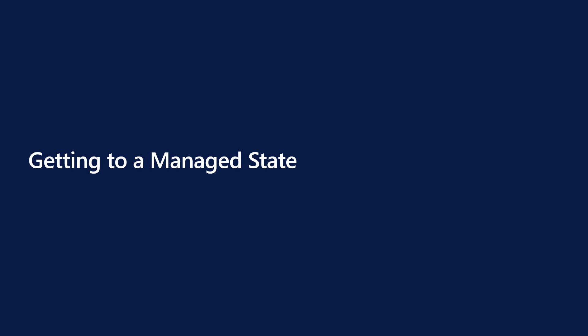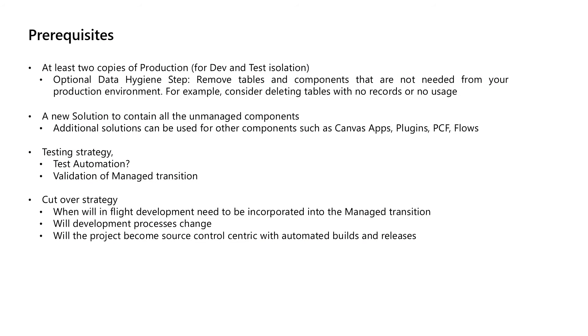Now that we understand the difference between unmanaged and managed solutions, let's look at how you get to a managed solution state. You will need at least two copies of your production environment — one will be used for development where you will be creating the new solution, and one will be used to deploy the solutions as managed and convert those unmanaged components. As an optional data hygiene step, you can review tables and components to see if you can remove any to clear up the environment.